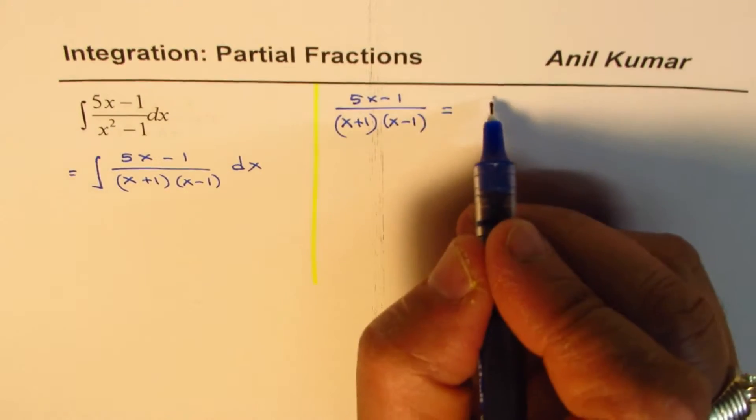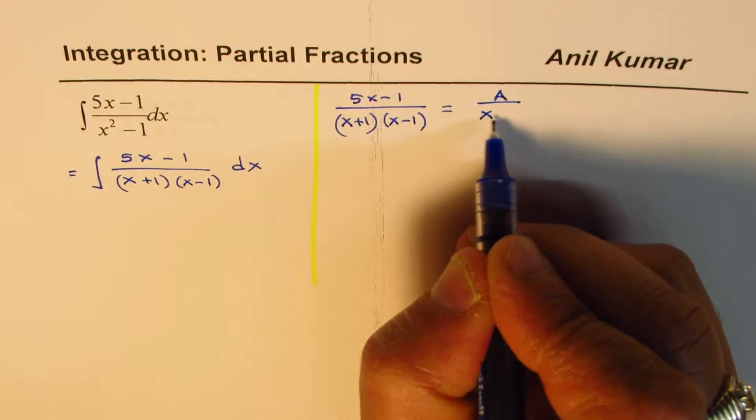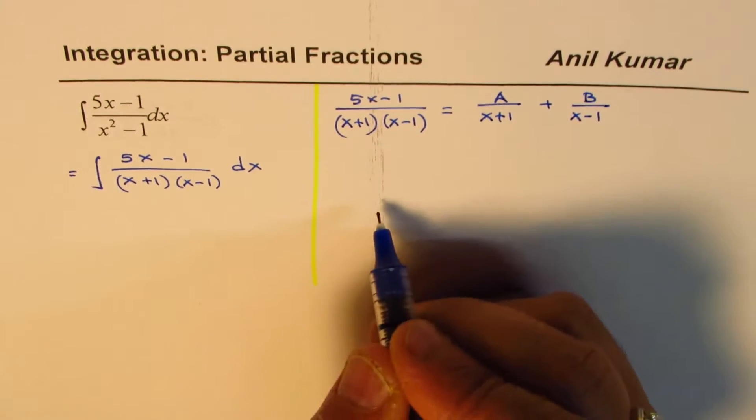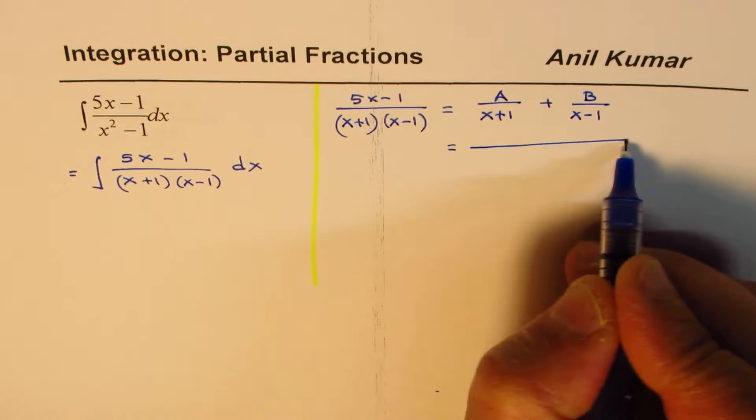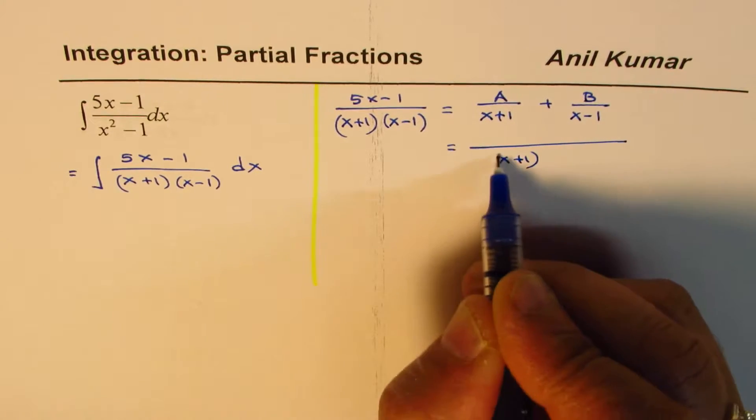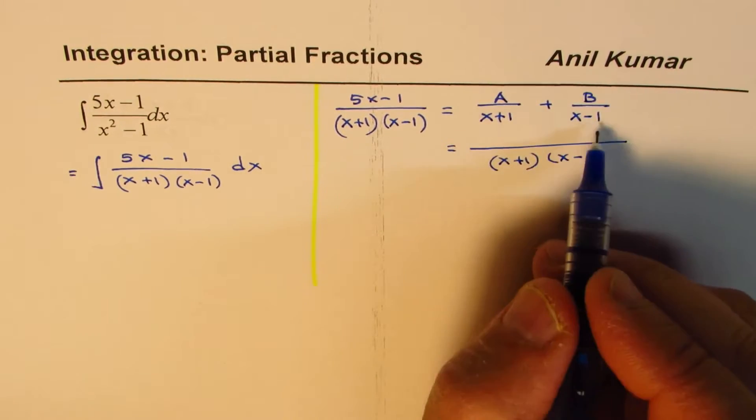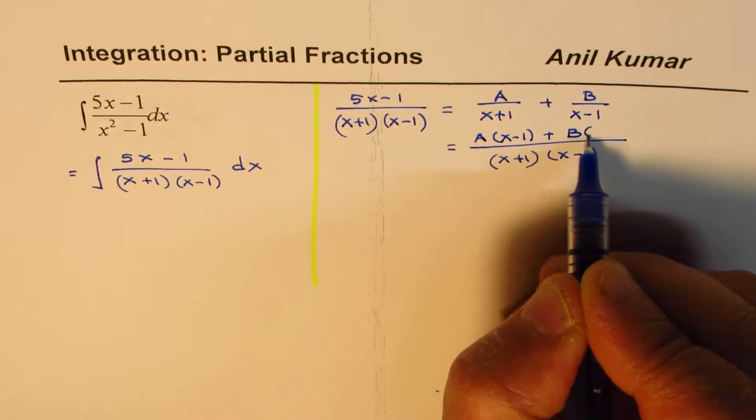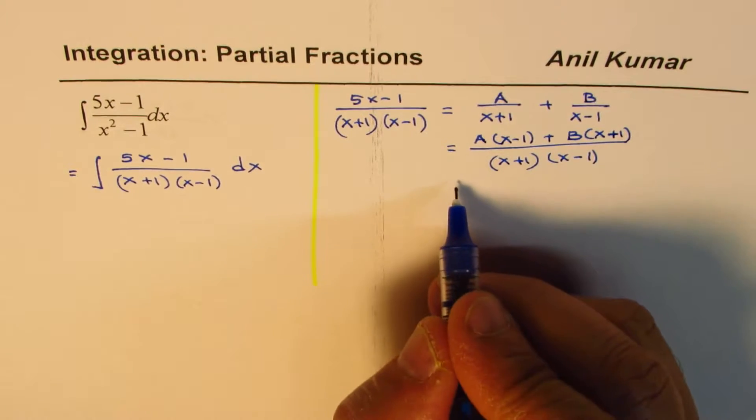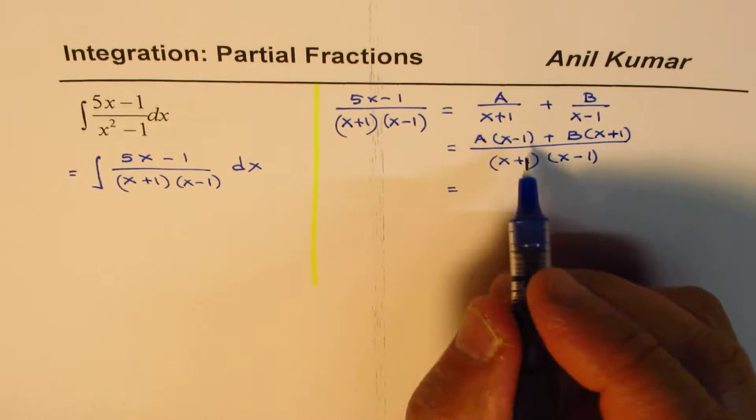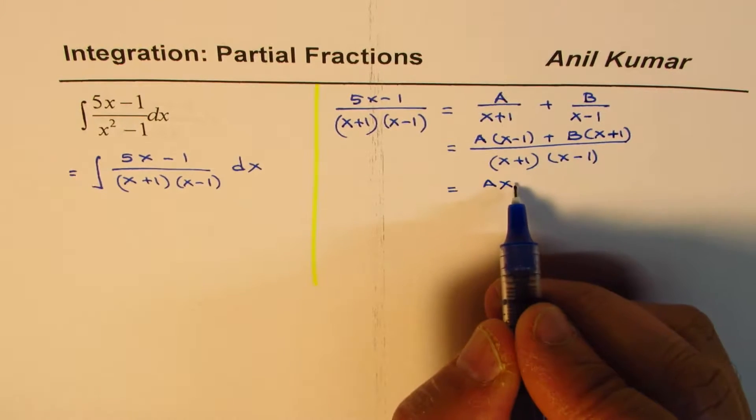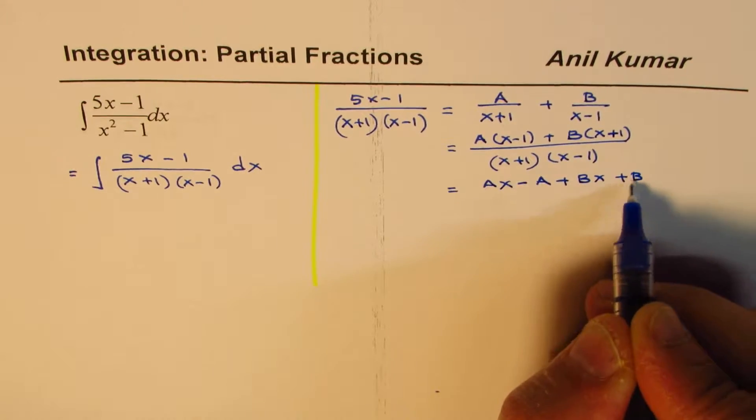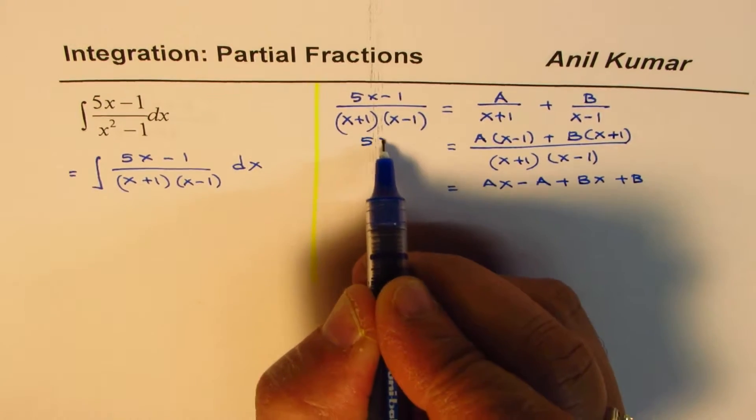So what we have here is 5x minus 1 divided by x plus 1 times x minus 1. We could always write this as A over x plus 1 plus B over x minus 1. So if I take common denominator of x plus 1 times x minus 1, I get A times x minus 1 plus B times x plus 1.